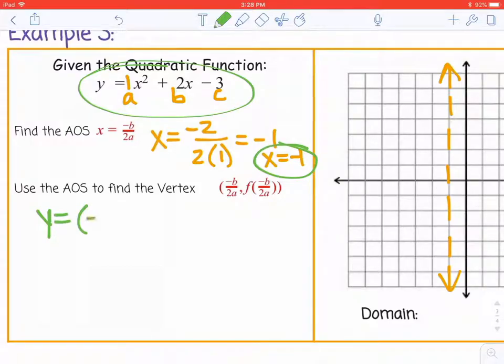So that would be (-1)² + 2(-1) - 3, which is 1 - 2 - 3, just cleaning up what we plugged in.